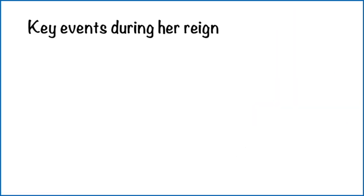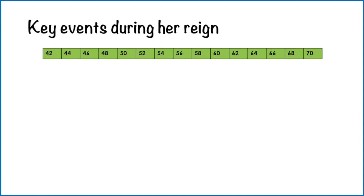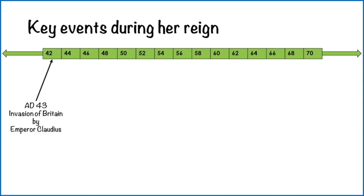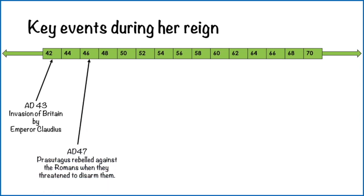Now let's take a look at the key events during her reign. Here's a timeline — you'll notice the scale has changed. The one we looked at before was in 200-year chunks; now this one is in two years. There are two arrows to remind us that events happened before this timeline and continue afterwards. AD 43: the invasion of Britain by Emperor Claudius. AD 47: Prasutagus rebelled against the Romans when they threatened to disarm them. Prasutagus was Boudicca's husband and king of the tribe — when it says threatened to disarm them, that meant to take away their independence, and he was very keen to hold on to that.